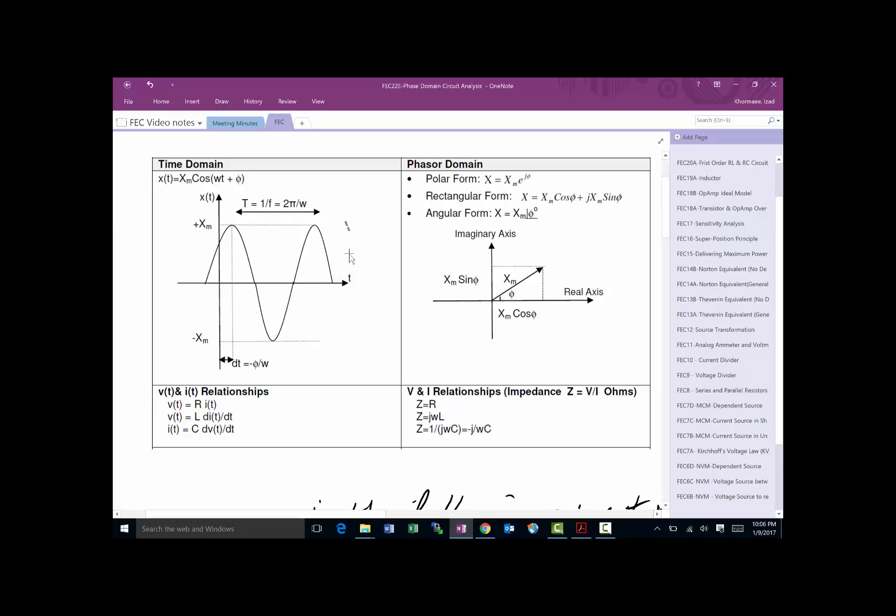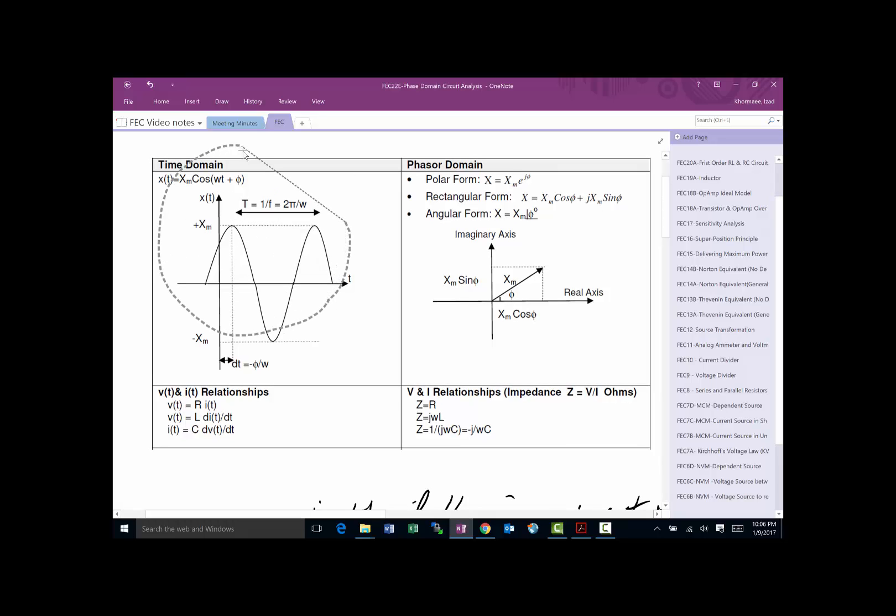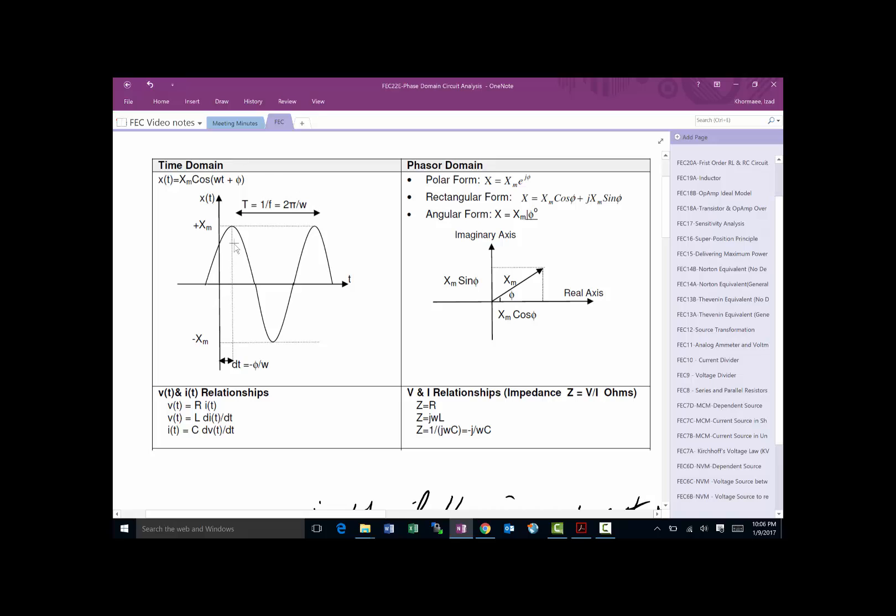Here we have a time domain signal. We represent it as x of t equal to x of m cosine of omega t plus phi. That same thing can go into phasor domain which we represent as a complex number. You can represent it in polar form, rectangular form, or angular form.